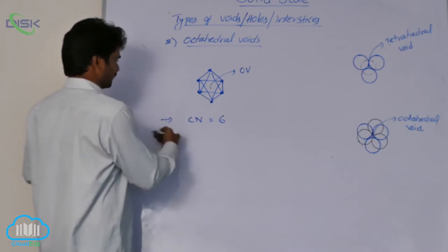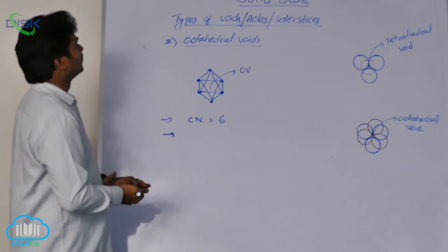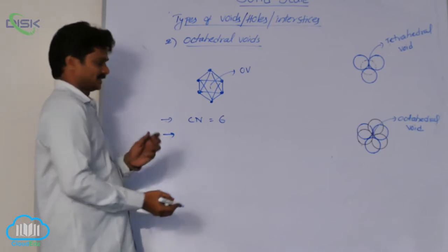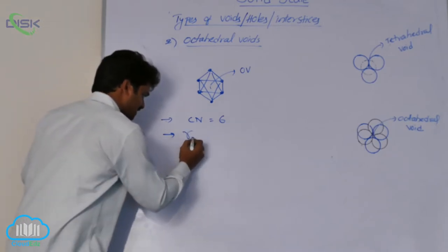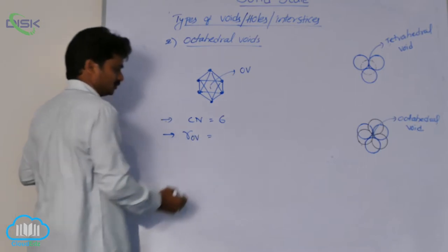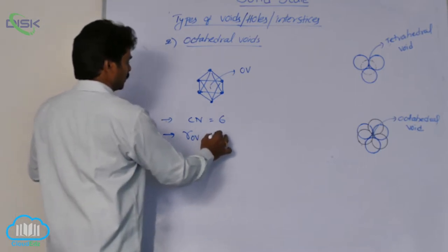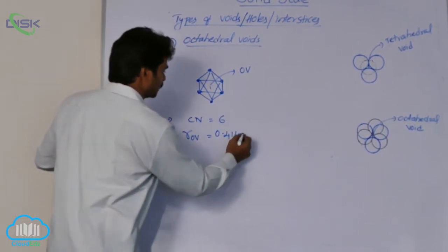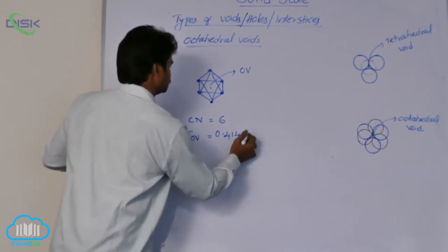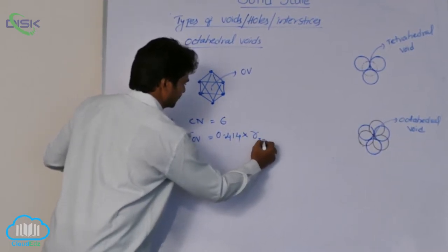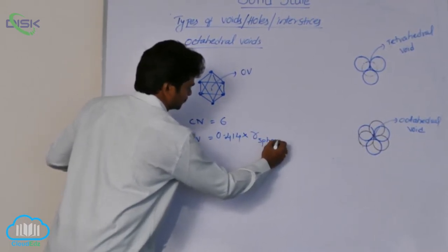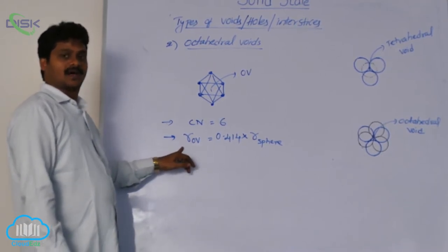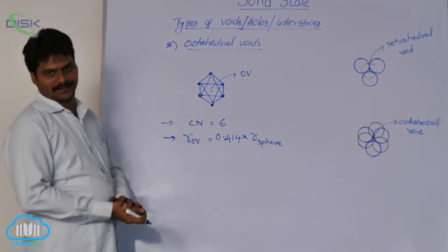The radius of an octahedral void equals 0.414 times the radius of the spheres. So this is the formula to calculate the radius of an octahedral void: r_void = 0.414 × r_atom.